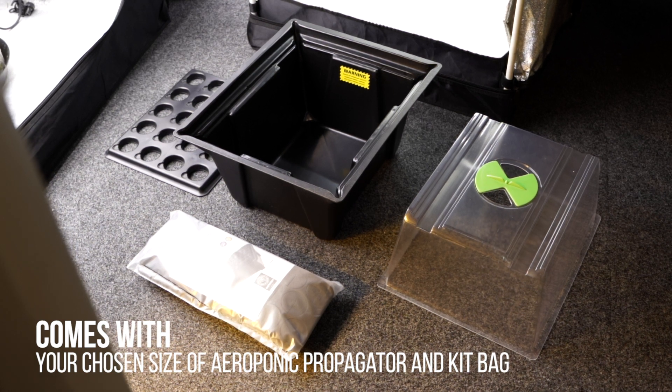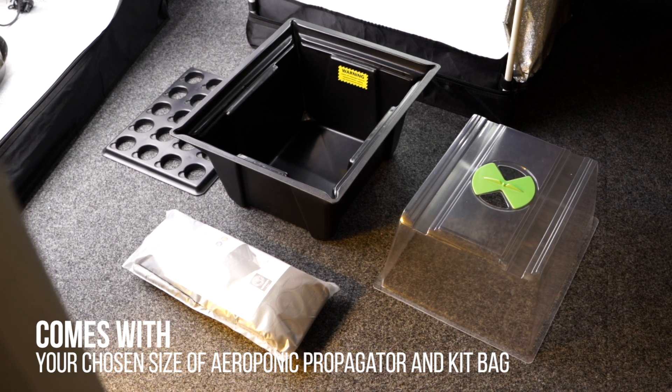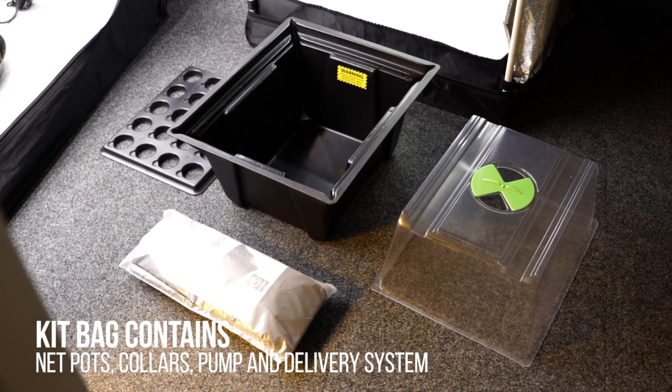You've got a reservoir base, a top tray to support your plants, and a clear plastic lid to lock in the humidity. There's also a kit bag with your net pots, collars, pump and delivery system.